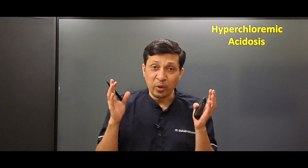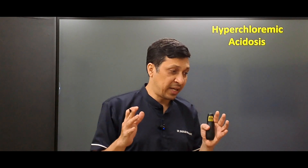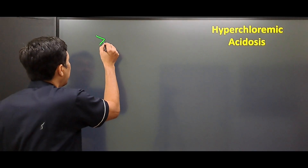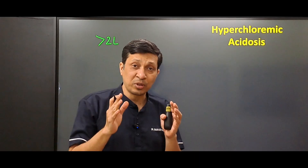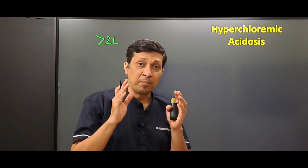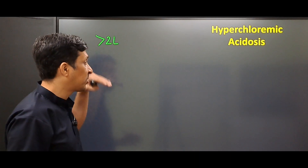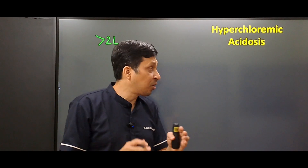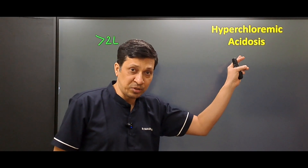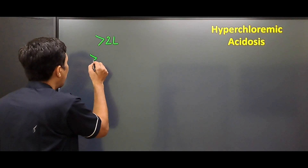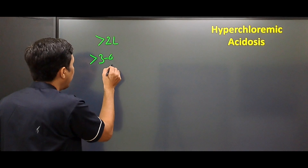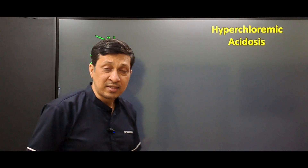So what's the big deal if the chloride content of normal saline is higher? Yes, it is a big deal when we infuse large amounts of normal saline. When we give more than two liters of normal saline, something called hyperchloremic acidosis begins, and the risk increases multifold when we give more than three to four liters.